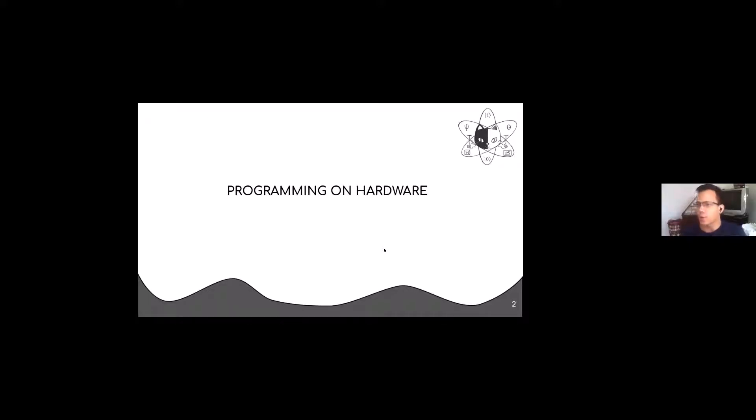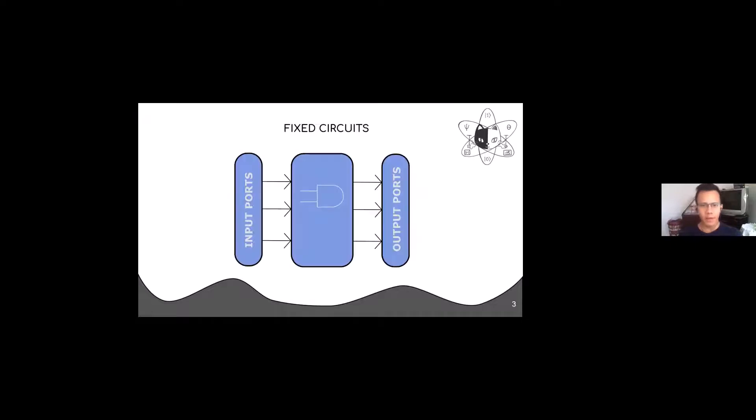Let's first talk about programming in hardware. How are you programming in hardware? Commonly, we usually program in software that is the most easy way to do it. But first, I want to talk about fixed circuits. In fixed circuits, we have some inputs and some outputs and one circuit implementation that is fixed. I cannot change the internal architecture of the circuit in this case.